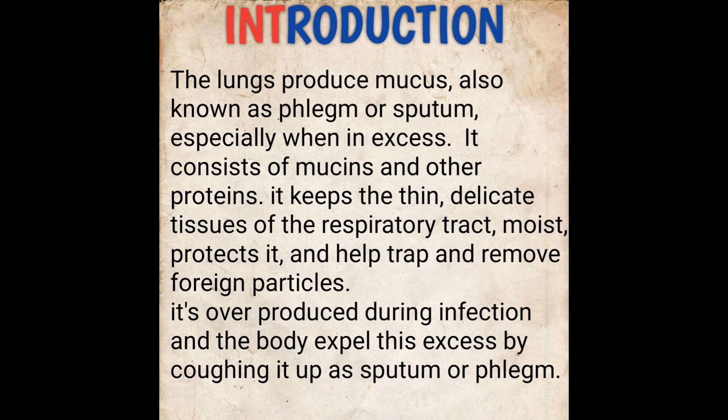Introduction: the lung produces mucus, also known as phlegm or sputum, especially during infection. It consists of mucus and other proteins. It keeps the thin, delicate tissue of the respiratory tract moist, protects it, and traps and removes foreign particles such as bacteria, fungi, and viruses. Overproduction of this mucus occurs during infection, and the body expels this excess by coughing it up as sputum.